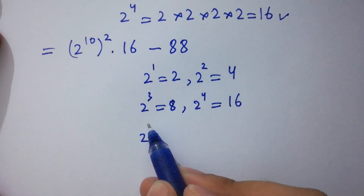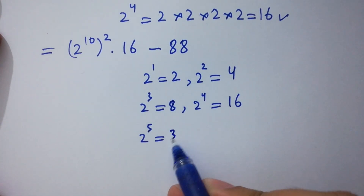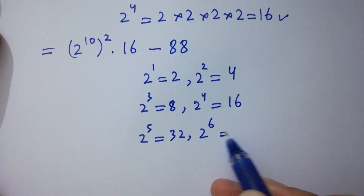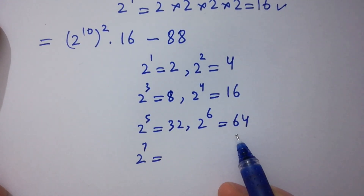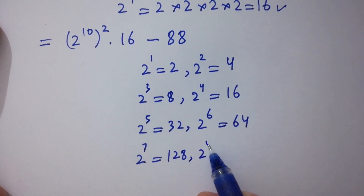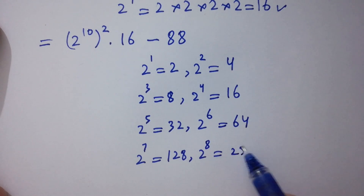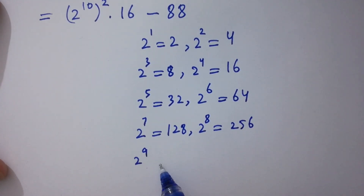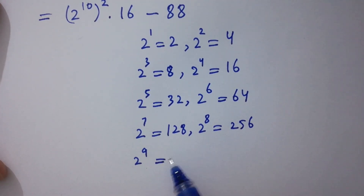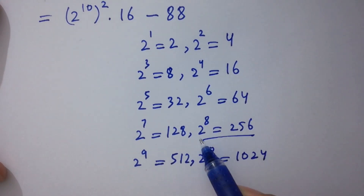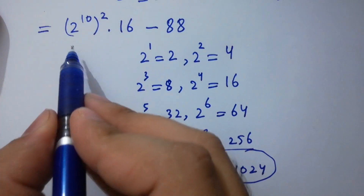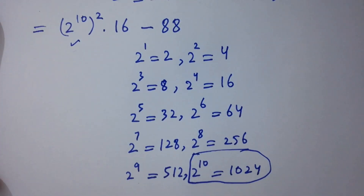Next, 2⁵ equals 16 times 2 is 32. 2⁶ equals 32 times 2 is 64. 2⁷ equals 64 times 2 is 128. 2⁸ equals 128 times 2 is 256. 2⁹ equals 256 times 2 is 512. 2¹⁰ equals 512 times 2 is 1024.